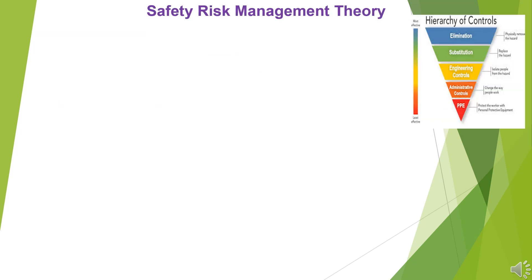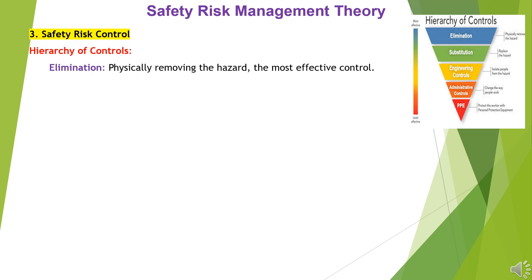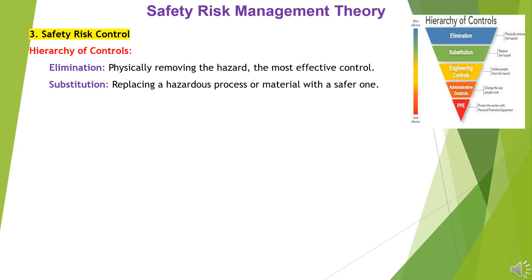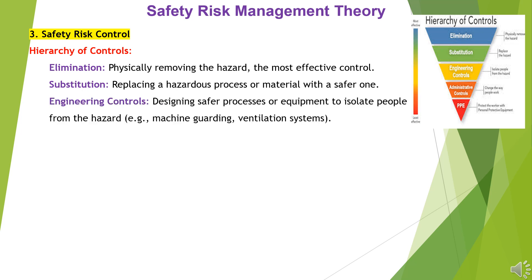3. Safety Risk Control — Hierarchy of Controls. Elimination: physically removing the hazard — the most effective control. Substitution: replacing a hazardous process or material with a safer one. Engineering Controls: designing safer processes or equipment to isolate people from the hazard, e.g., machine guarding and ventilation systems.